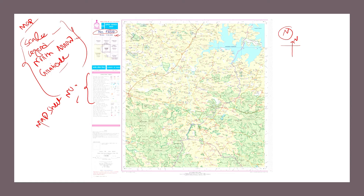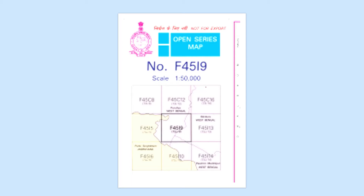If we zoom into this numbering portion, it looks like this. The scale value is shown here, and this is the topo sheet number. This topo sheet number represents a specific portion of the Earth's surface — it is a unique representation. Every topo sheet number is unique. The question is: how does the Survey of India assign this number?